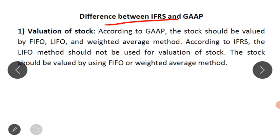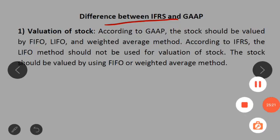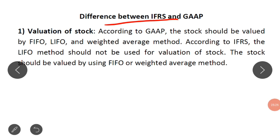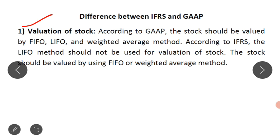Now the last part of this lecture — the difference between IFRS and GAAP. IFRS stands for International Financial Reporting Standards. Basically there are three differential points. The first point is valuation of stock. According to GAAP, the closing stock should be valued by LIFO, FIFO, or by the weighted average method.